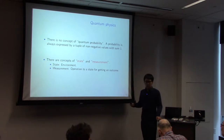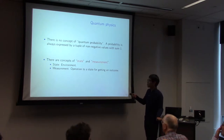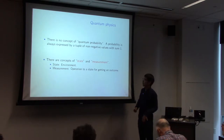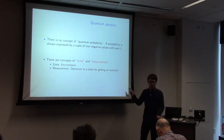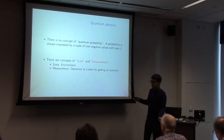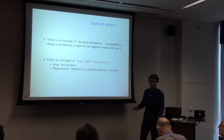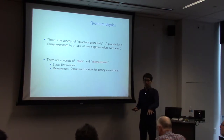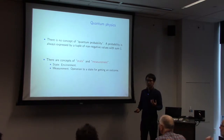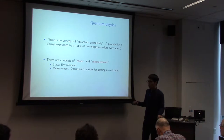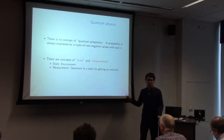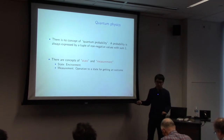Maybe some of you are not familiar with quantum physics — that's okay, no problem. There is no concept of quantum probability. Probability is always a tuple of non-negative values summing to 1, no exception. What is new are two concepts: state and measurement. State is something like an environment, and measurement is an operation on state. If we perform a measurement on a state, we obtain an outcome, and this outcome obeys some probability distribution determined both by state and measurement. This is all of what we should know about quantum physics here.